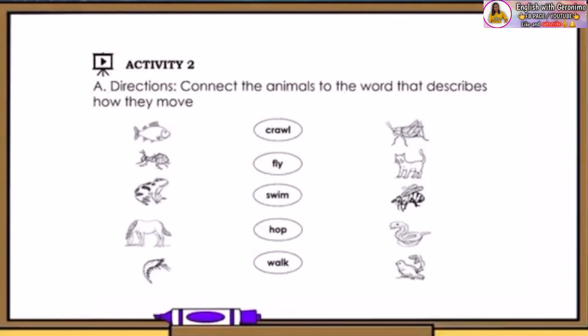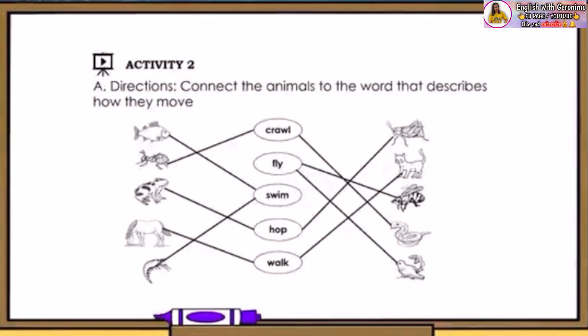Connect the animals to the word that describes how they move. Fish. The fish can swim. And the ant can crawl. Frog. How do frogs move? It hops. Horse. The horse walks and runs. How about the shrimp? The shrimp swims. The grasshopper hops too. The cat walks. The bees fly. The snake crawls on its belly. And last, the bird flies.